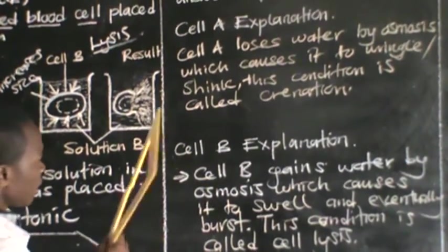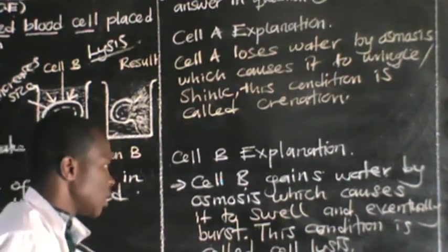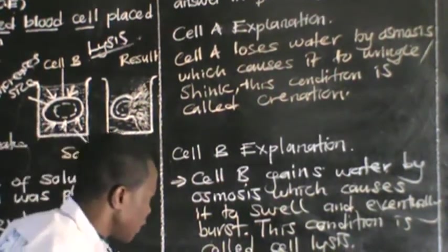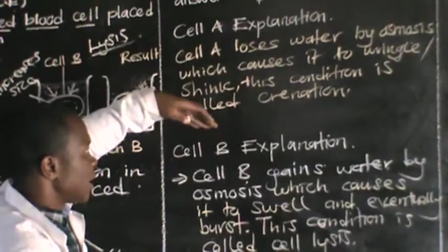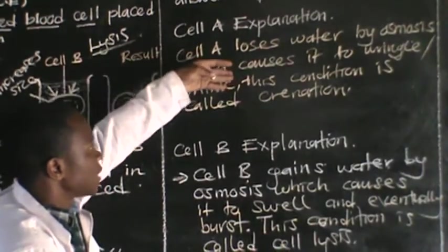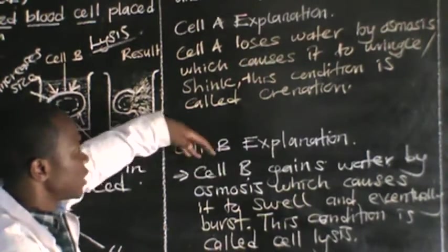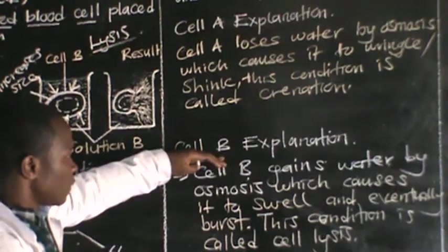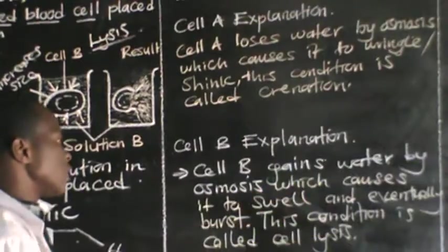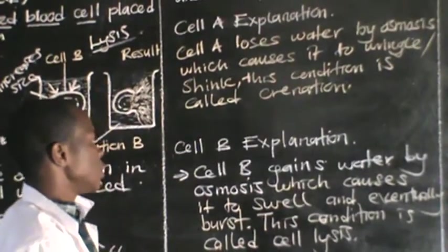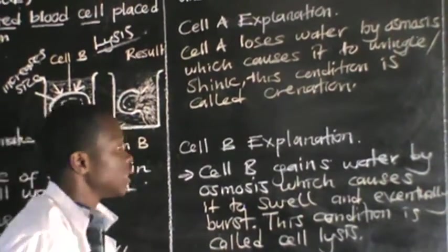On the other side, for cell B: as cell B gains water by osmosis, it increases in size, which causes it to swell and eventually it bursts. This is the condition called cell lysis.